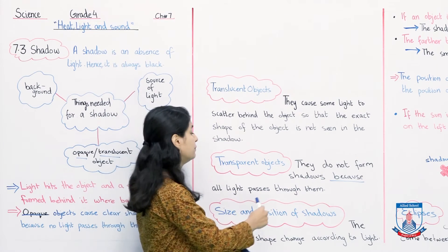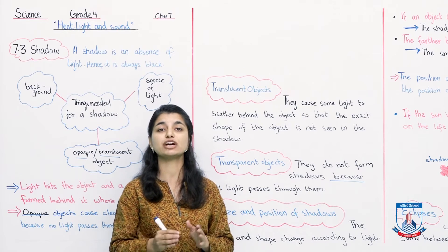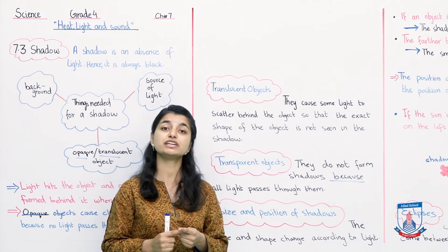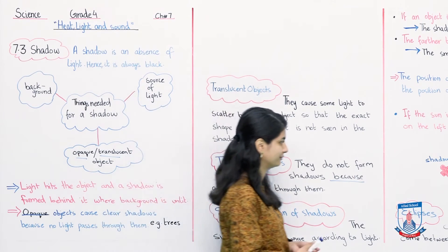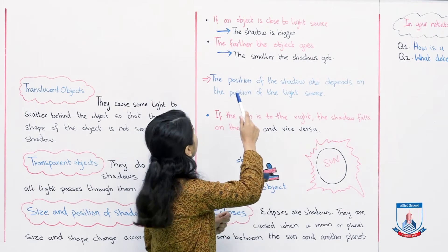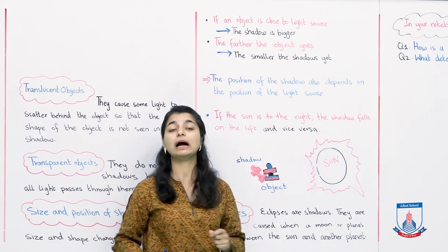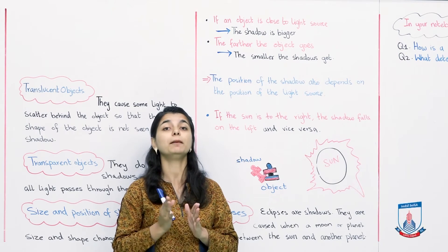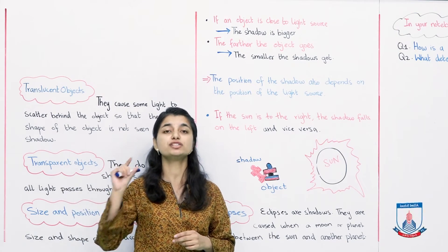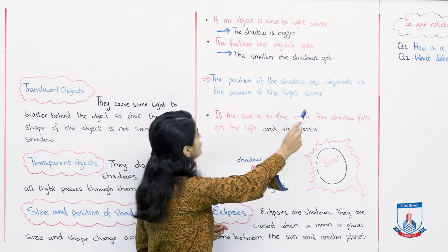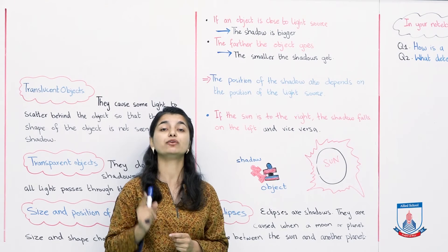Now let's look at the size and position of shadows. The size and shape of a shadow change according to the light source. If an object is close to the light source, the shadow is bigger. The farther the object is from the light source, the smaller the shadow gets. The position of the shadow also depends on the position of the light source.